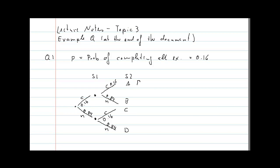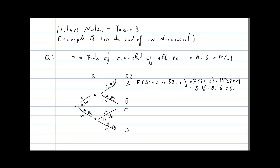For outcome A — both students complete — we need the probability that student 1 completes and student 2 completes. Since events are independent, this is the probability student 1 completes times the probability student 2 completes: 0.16 × 0.16 = 0.0256. This formula is only valid because of independence.